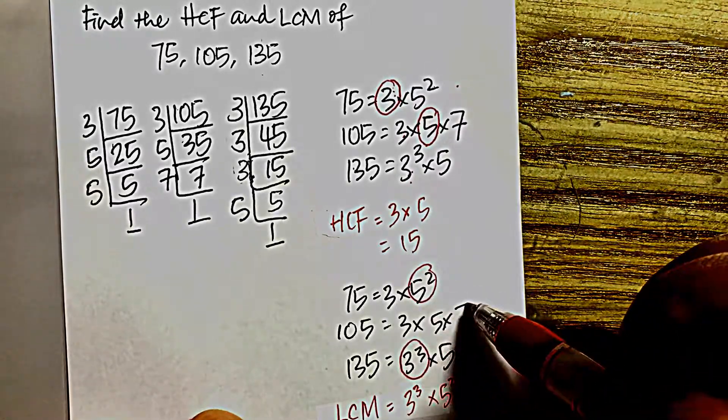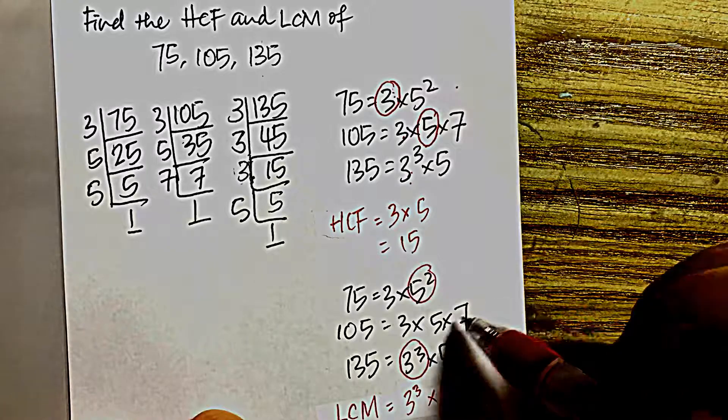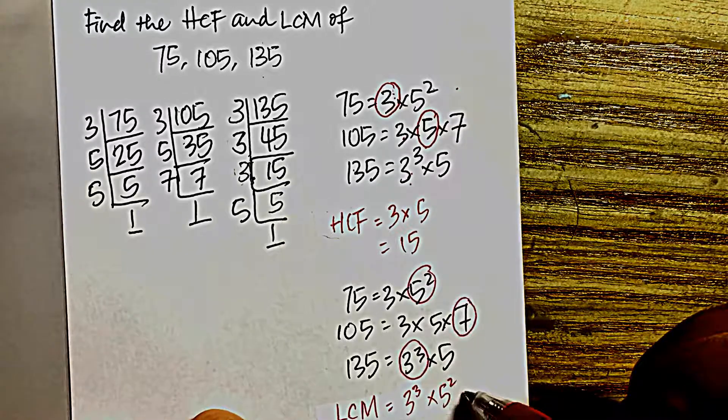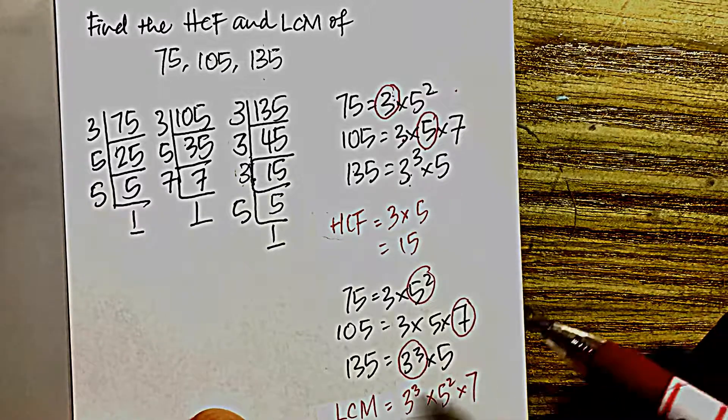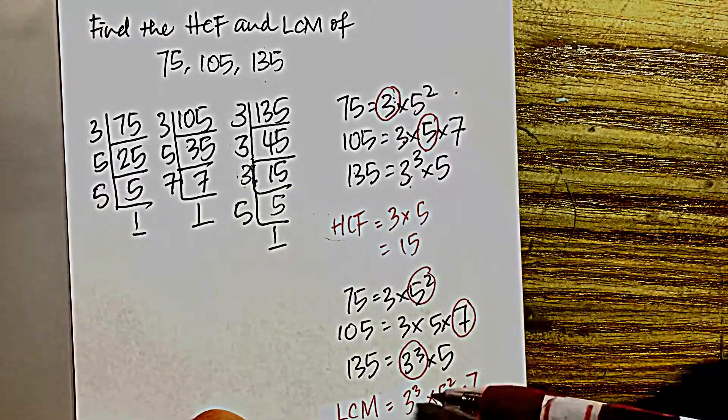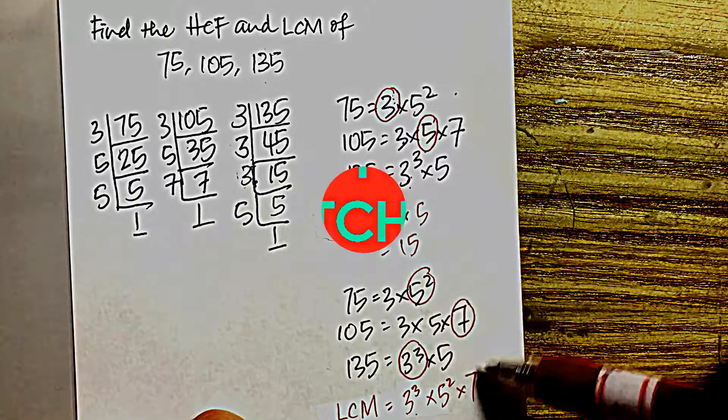Next, we have 7, and there isn't any other 7 around, so of course this one is the highest among all. Hence, the LCM, when expressed in index notation, is 3 to the power of 3 times 5 squared times 7.